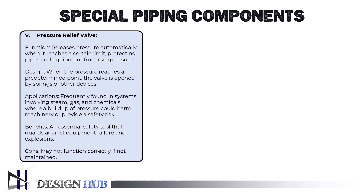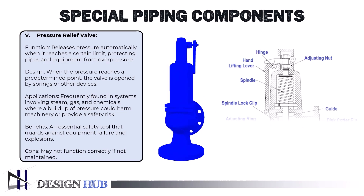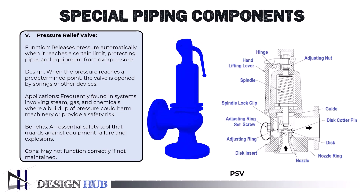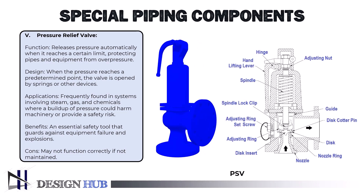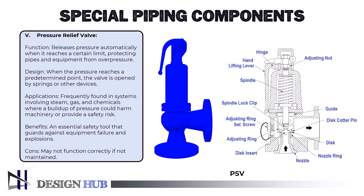The distinction between a pressure safety valve, PSV, pressure release valve, PRV, or pressure relief valve is that PSVs require a human lever to be activated in an emergency. Springs operate the majority of PRVs. Some substitute a diaphragm for a spring while operating at lower pressures. A weight is used in the first PRV designs to seal the valve.